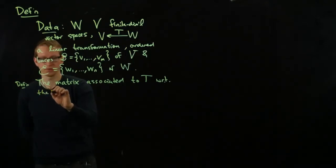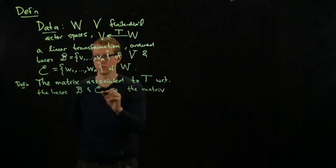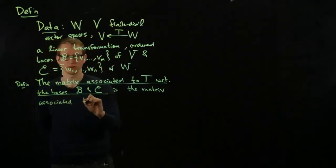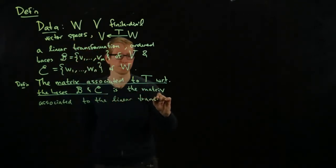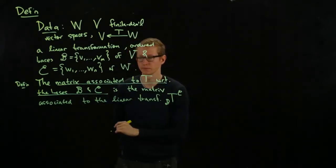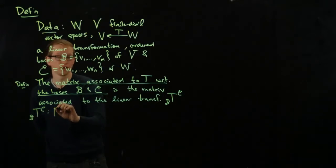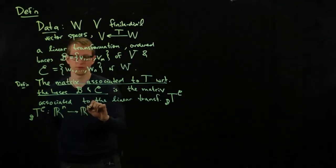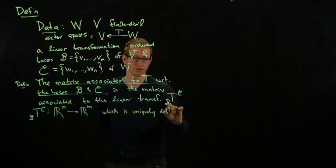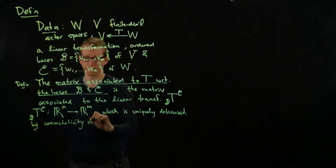The matrix associated to T with respect to this data, so these data, so the bases B and C is the matrix, and let me underline this, because this is what we're defining, is the matrix associated to the linear transformation, which we denote by T_B^C. And you'll see why we denote it like this in a moment.